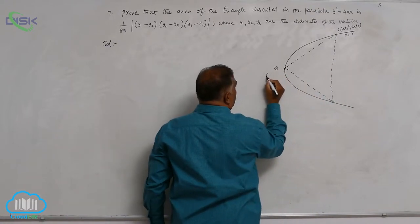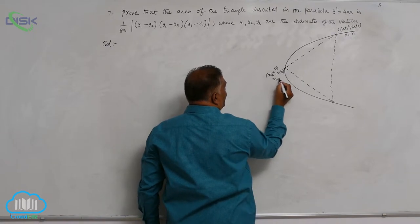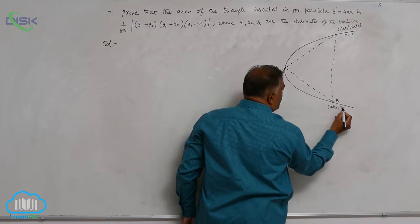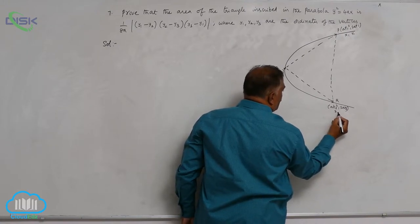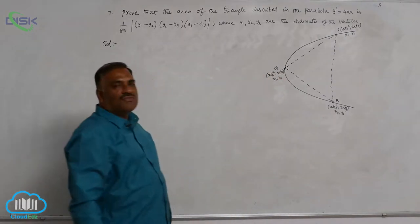Q at₂² comma 2at₂ referring to x₂ comma y₂, R at₃² comma 2at₃ referring to x₃ comma y₃.